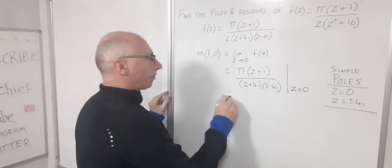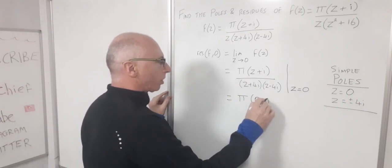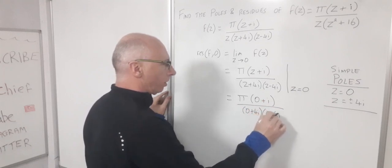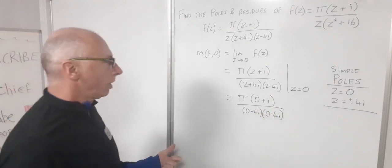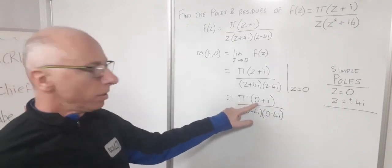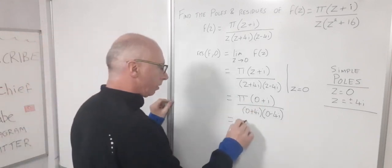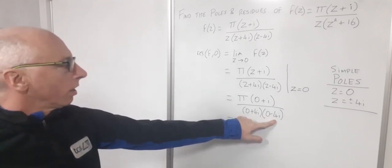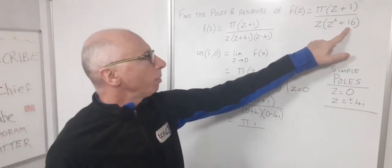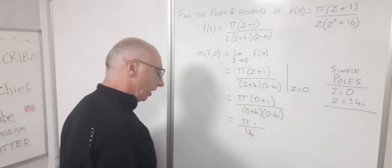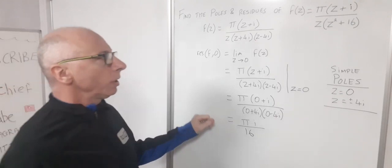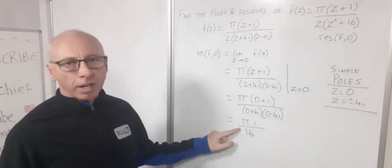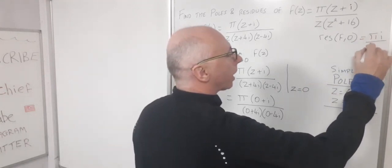Plugging in z=0: π(0+i) / [(0+4i)(0-4i)] = πi / (4i × -4i). We already know 4i × -4i = 16, so this gives πi/16. Therefore the residue of f at z=0 is πi/16.